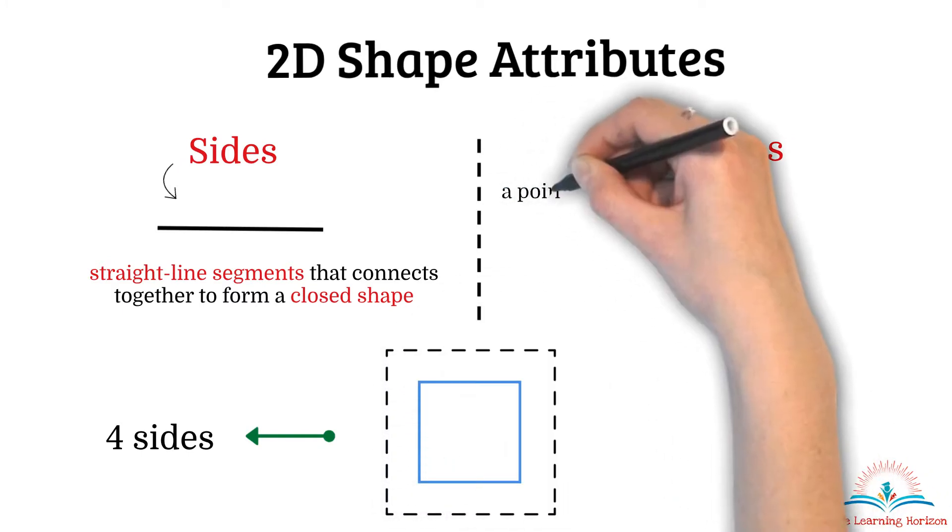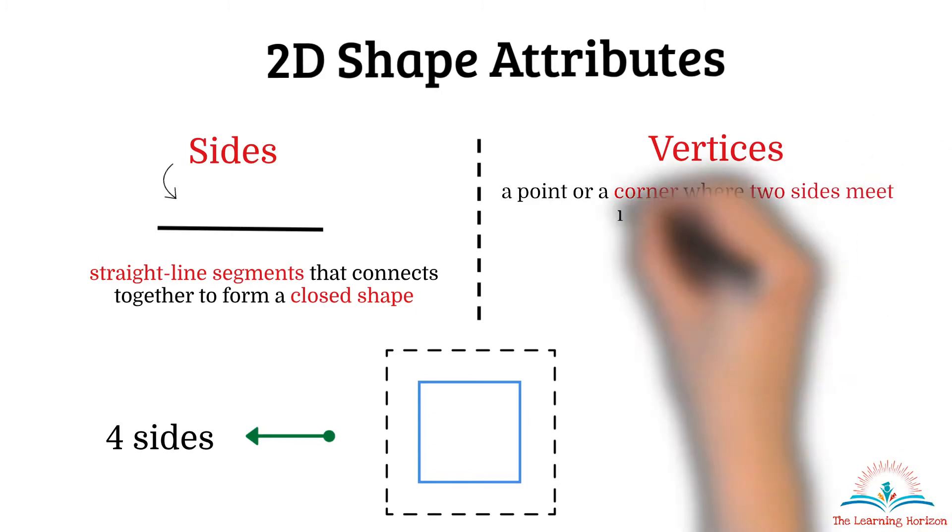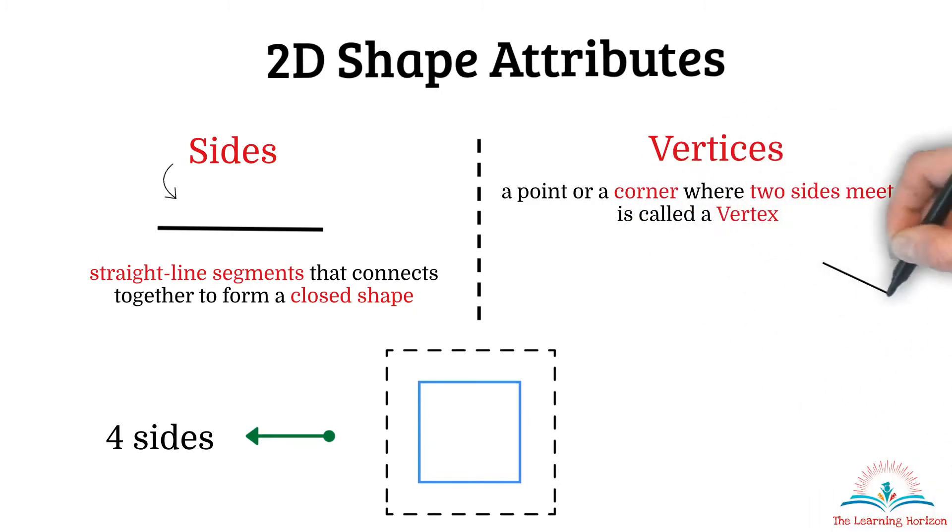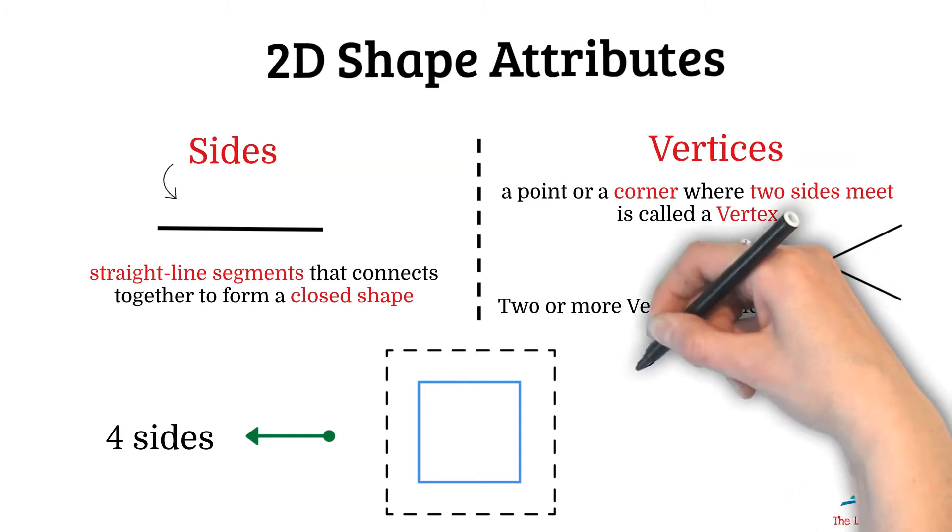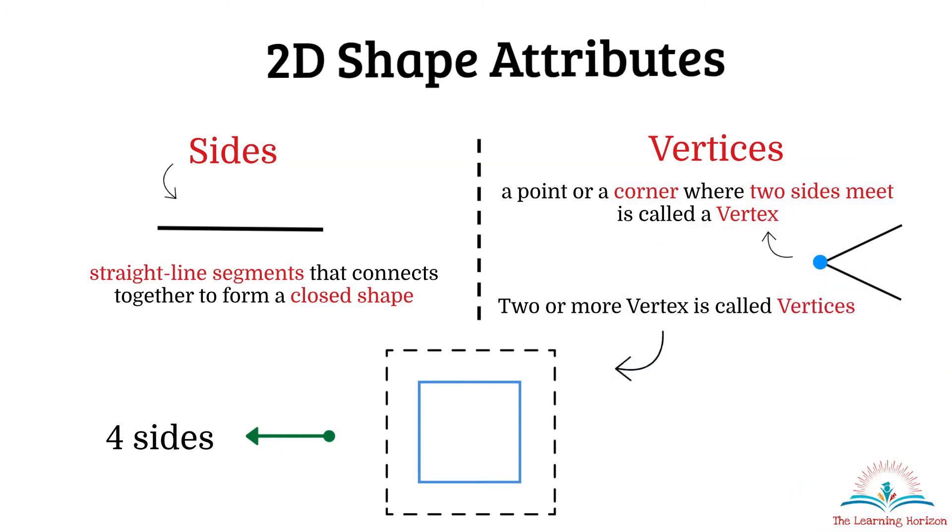A point or a corner where two sides meet is called a vertex. For example, these two sides are meeting at this common point and this point is called a vertex. Two or more such vertex together is called vertices. In the same shape let us see how many vertices do we have. One, two, three, four. So this shape has four sides and four vertices.